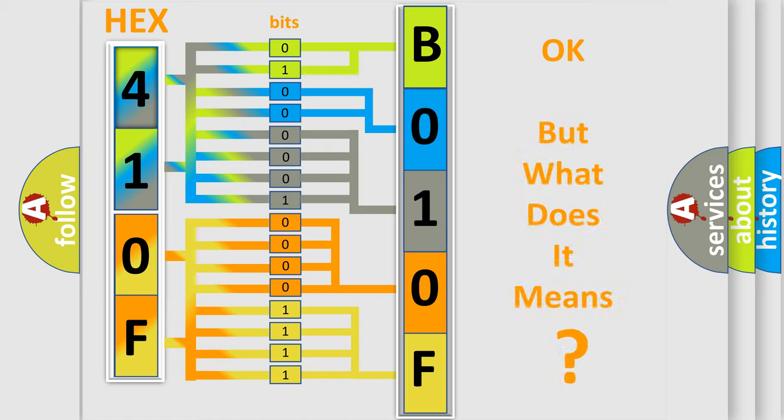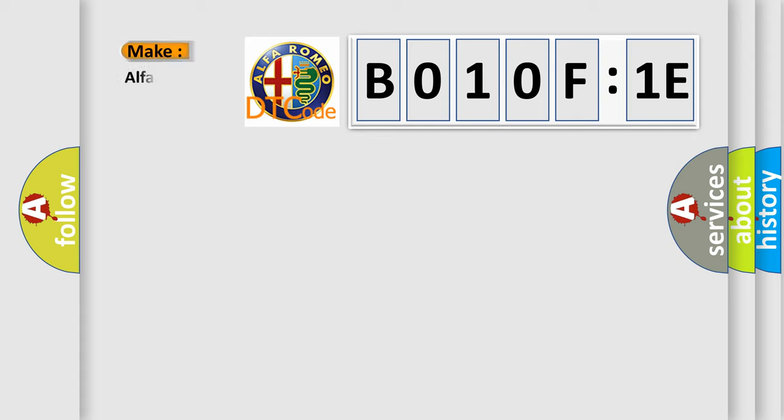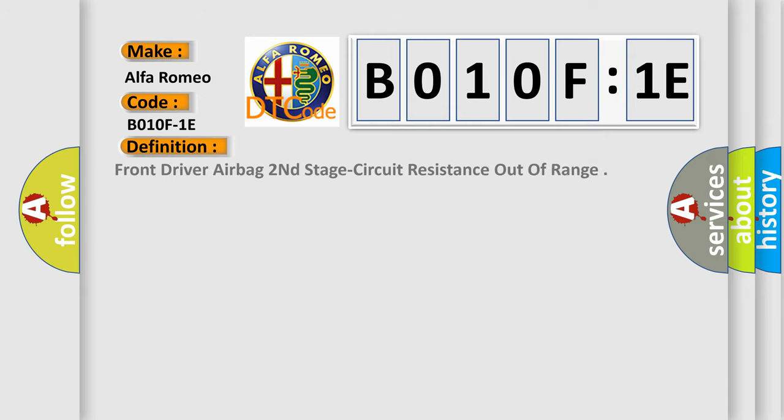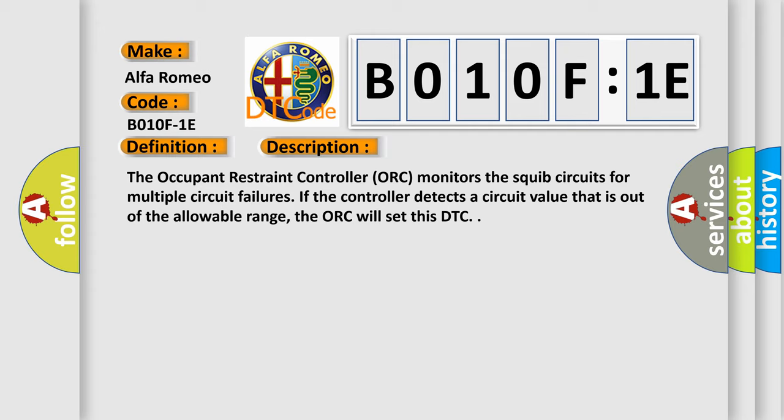We now know in what way the diagnostic tool translates the received information into a more comprehensible format. The number itself does not make sense to us if we cannot assign information about what it actually expresses. So, what does the diagnostic trouble code B010F:1E interpret specifically for Alfa Romeo? The basic definition is front driver airbag second stage circuit resistance out of range.